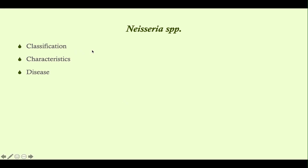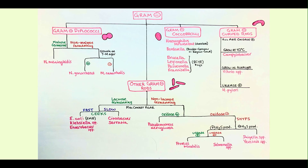We're going to talk about the classification of Neisseria, the general characteristics they have in common, and then briefly touch on the diseases — just a 30,000-foot overview before we cover each species in detail individually. This is our algorithm you'll want to memorize for the exam. We're right here in the gram-negative diplococci. There are three of them; I'll do videos on Neisseria meningitidis and Neisseria gonorrhea. Moraxella catarrhalis is very low yield for the exam.